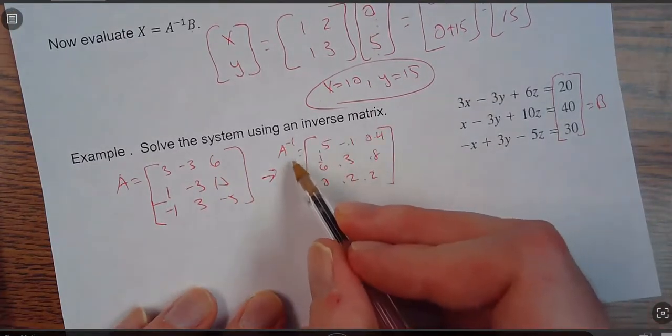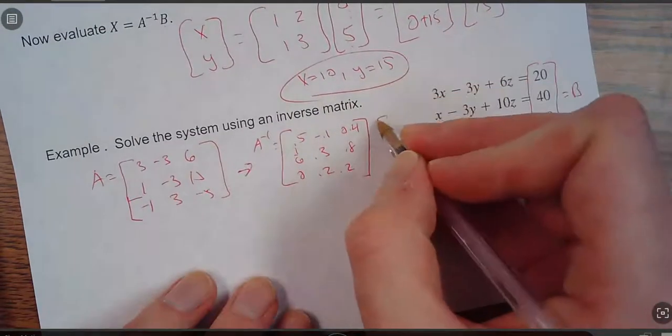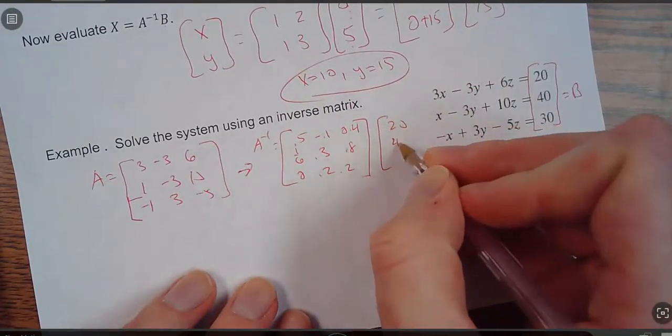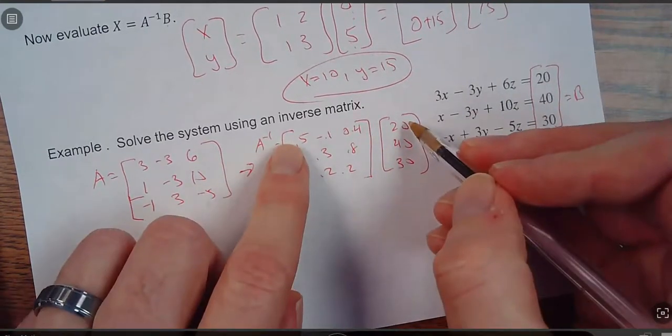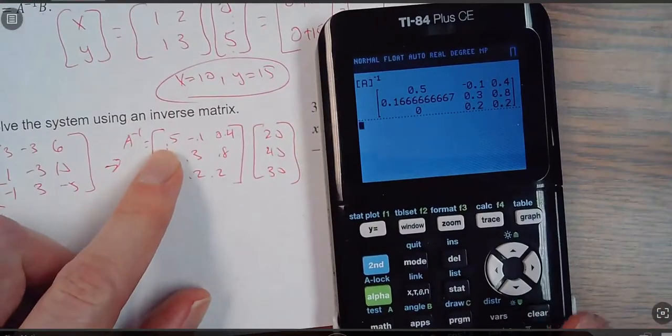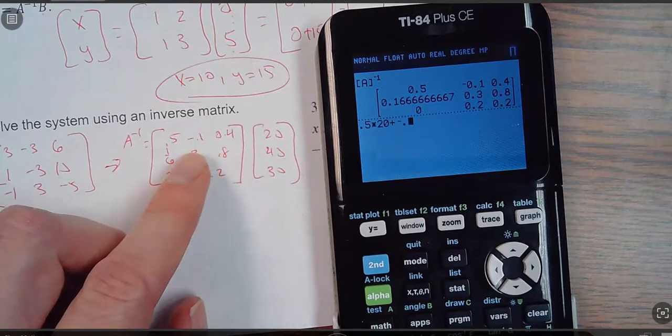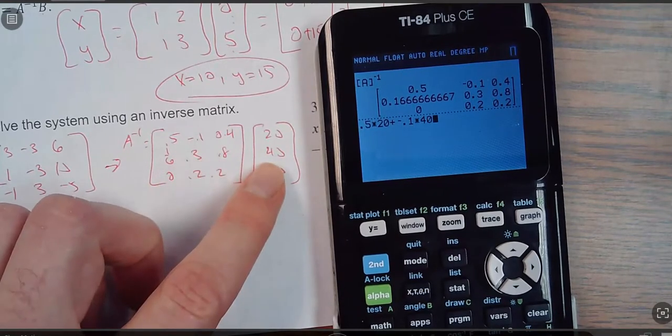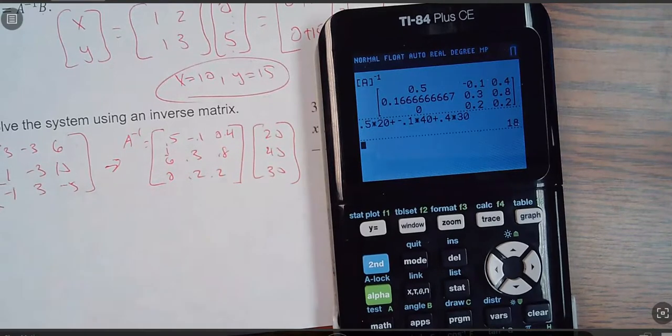Okay, and I want to take this inverse. Remember, it's inverse times B. So I'm going to take this inverse times 20, 40, 30. Okay, so if I multiply these out, which I'll do it on the calculator here. I'm going to take, so this would be 0.5 times 20, plus negative 0.1 times 40, plus 0.4 times 30. 18. So x equals 18.